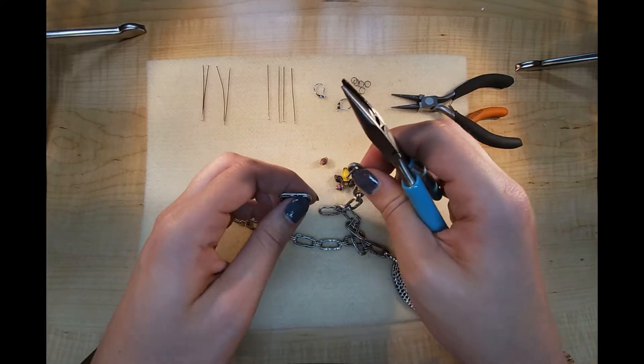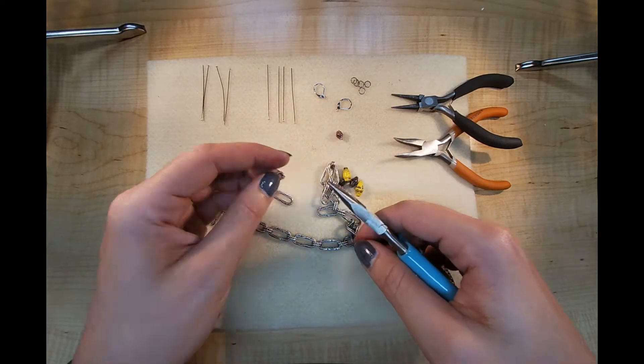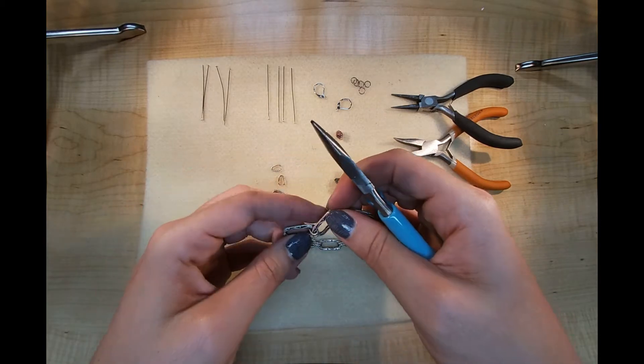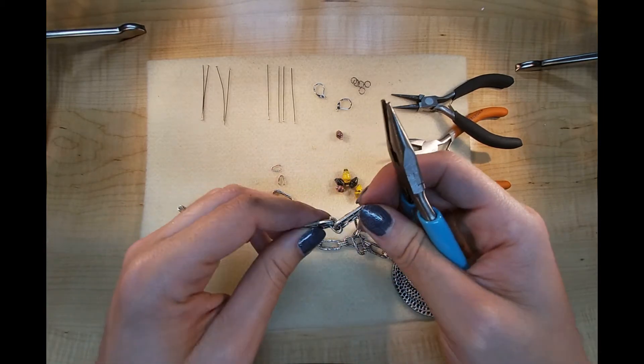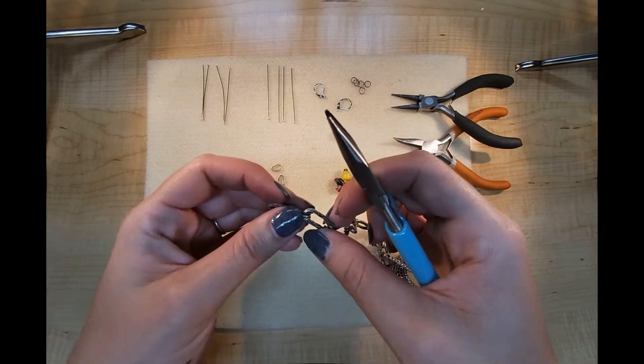So they open up enough to where I can get the bigger link out. There isn't quite enough room for my pliers to really get in there. So I have to pull on them a couple of times.